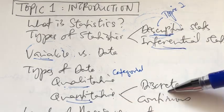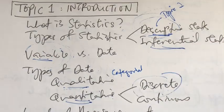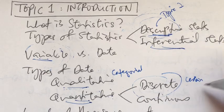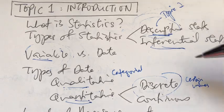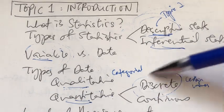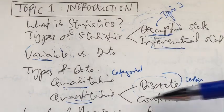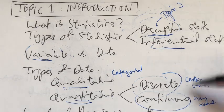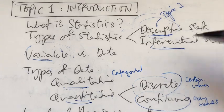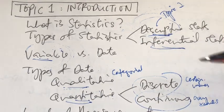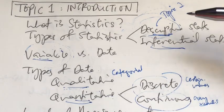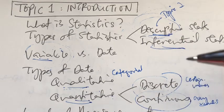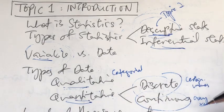Quantitative data is further divided into discrete and continuous. Discrete means the data can take certain values, and there are usually gaps between the values — for instance, the number of cars or children: one car, two cars, three children. We don't have two and a half cars or 10.75 children. Continuous data can take any value within a specified range — for instance, time taken to do an exam. If your exam is three hours, a person can finish in one hour, two hours, or two and a half hours, but cannot exceed three hours.